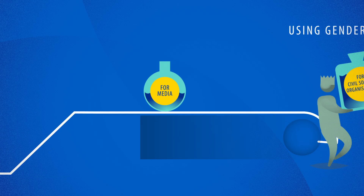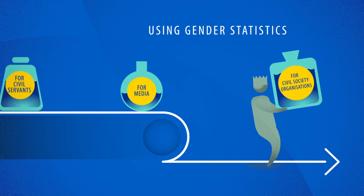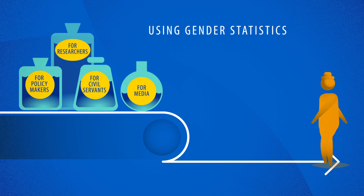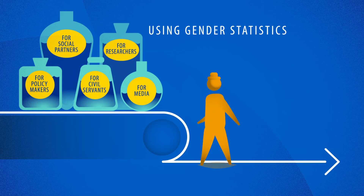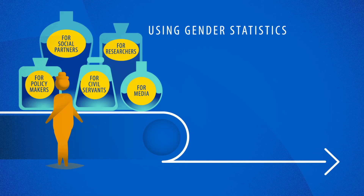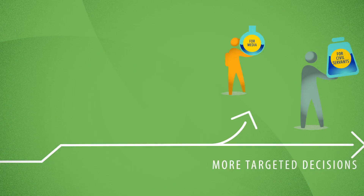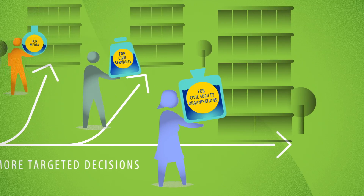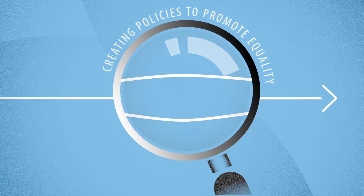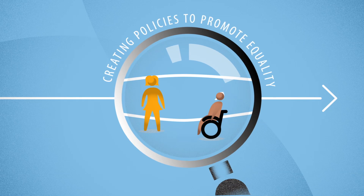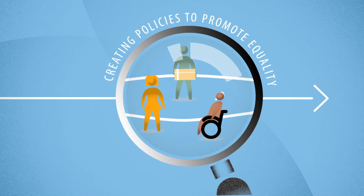How can gender statistics be useful? Gender statistics can be used by policymakers, civil servants, researchers, media, civil society organizations, social partners, and individual users. They use gender statistics for qualitative and quantitative research and policy making, and for advocacy and lobbying. Gender statistics identify gender inequalities that require policy interventions which aim to promote gender equality in the member states and at the European level.